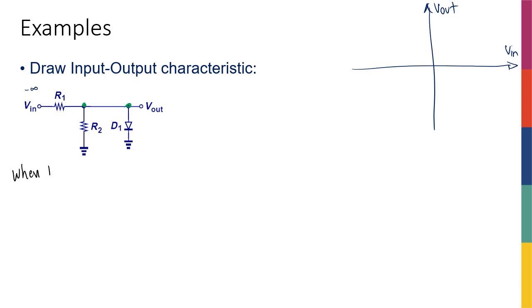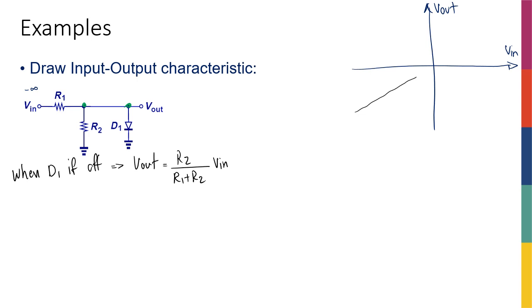When D1 is off it's an open circuit, so I'm left with just a voltage divider. Vout = R2 / (R1 + R2) · Vin. This means coming from negative infinity the slope of the line is R2 / (R1 + R2), which is less than 1, so it's a shallower line than the previous example.